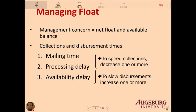Management's concern is the net float and available balance. The collection and disbursement time depends on three components: mailing time, processing delay, and availability delay. To speed up collection, decrease one or more of these. Mailing time is now much faster because of email. To slow down disbursement, increase one of them — for example, you can increase mailing time or introduce some delays.